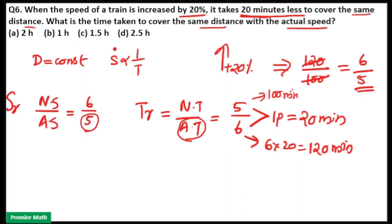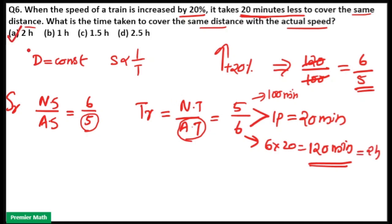We need to find the time taken to cover the same distance with the actual speed. With actual speed, actual time will become 6 parts, which is equal to 120 minutes, that is 2 hours. So option A is your answer.